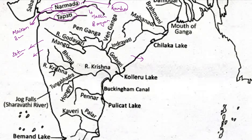The Tapi river basically flows between the Vindhyan and Satpura ranges. It is sourced from Satpura hills, and there is a Ukai Dam on it. Its source is the Betul Plateau. If you have heard of Kanha National Park, the Tapi flows through Gujarat and is also called the twin of Narmada.